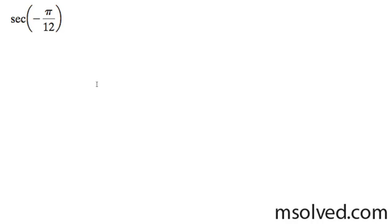Let's find the exact value of secant of negative π over 12. This is the same thing as cosine, except we reciprocate it. We'll do that at the end. For now, I'm just going to treat this as a cosine.